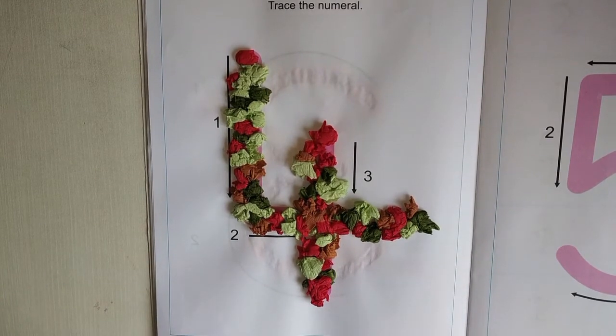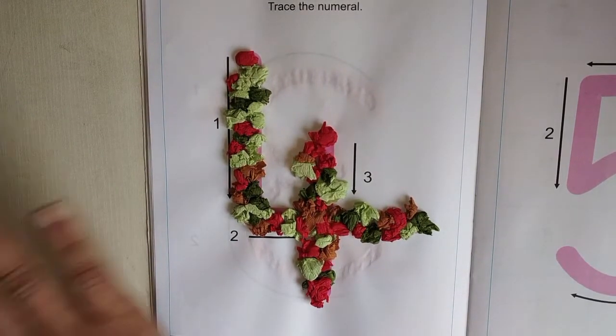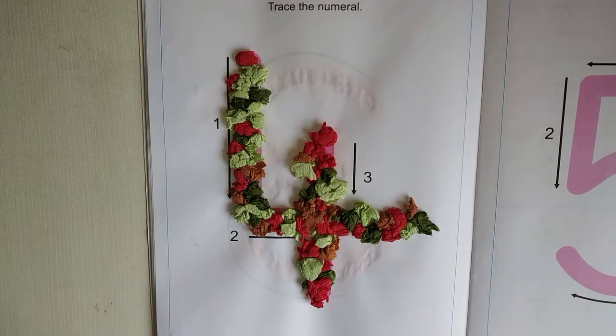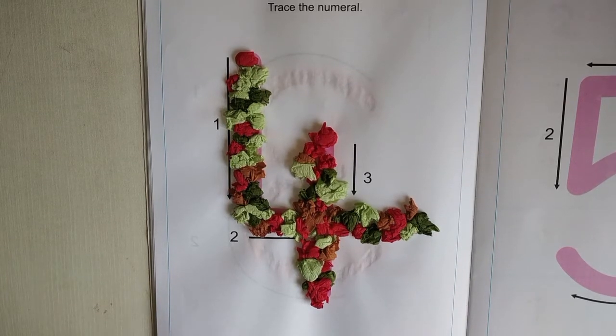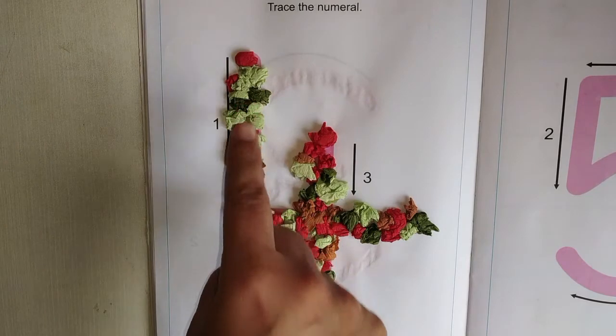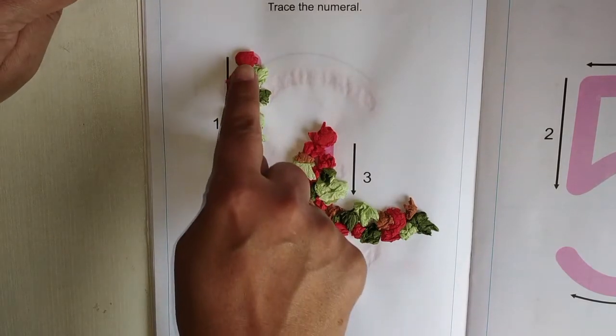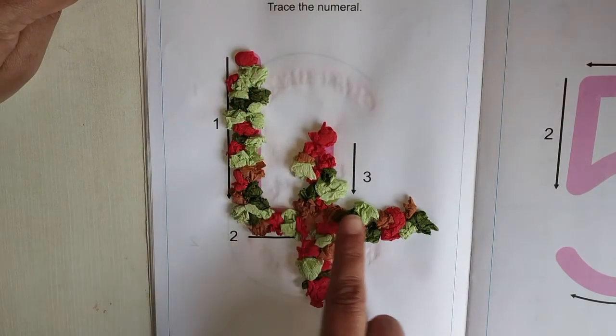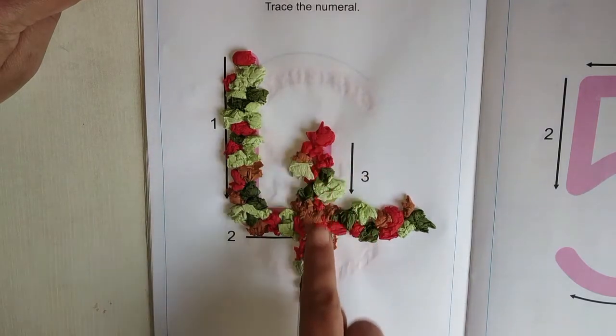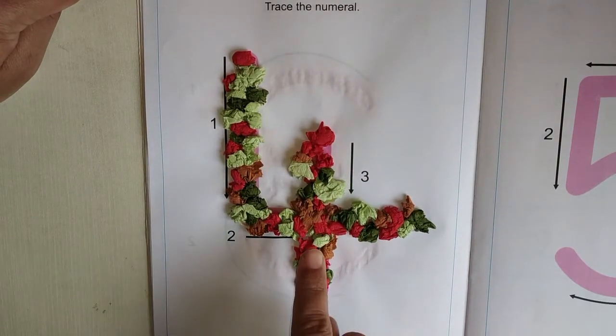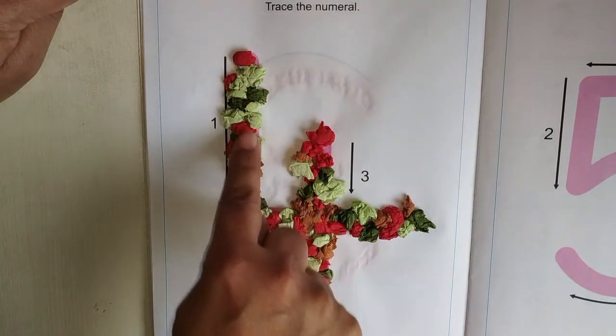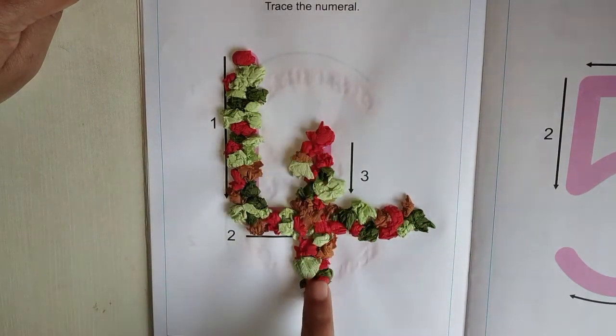Children, my number 4 is completely dry. So now what I am going to do is, I am going to take my pointer finger, and with my pointer finger, I am going to trace number 4.